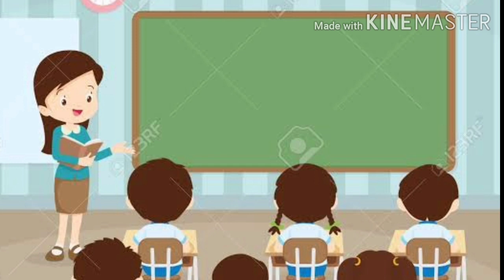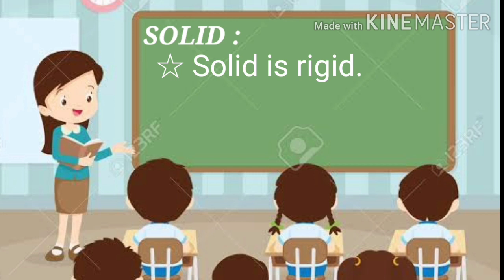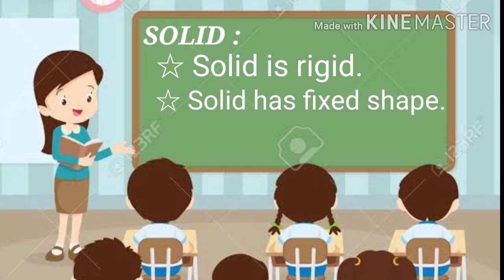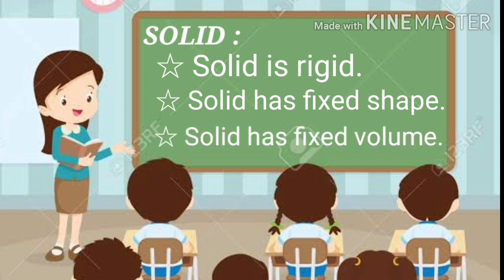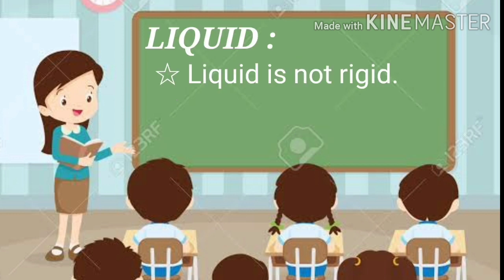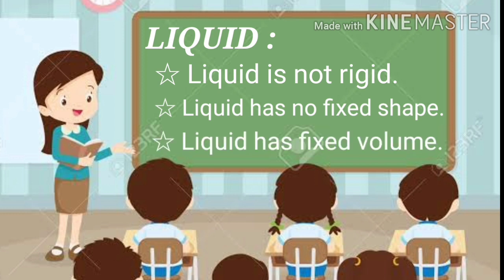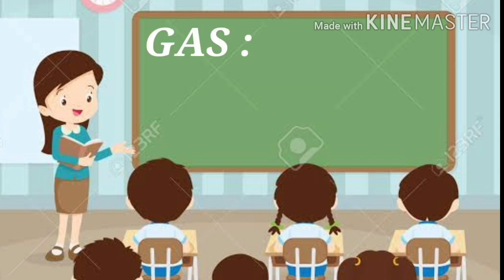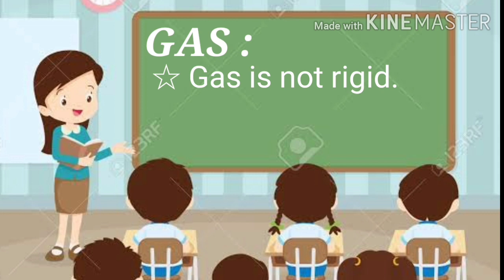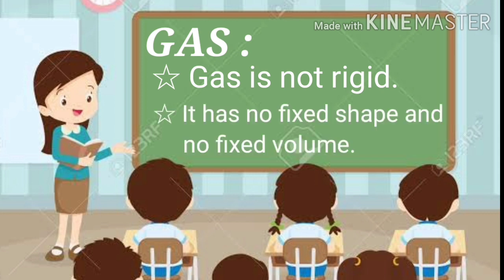Children, once again I will say, you repeat after me. Solid is rigid. Solid has fixed shape. Solid has fixed volume. Liquid — liquid is not rigid. Liquid has no fixed shape. Liquid has fixed volume. Gas — gas is not rigid. It has no fixed shape. No fixed volume.